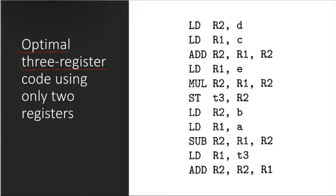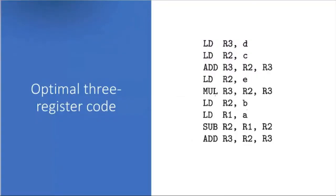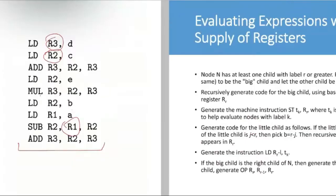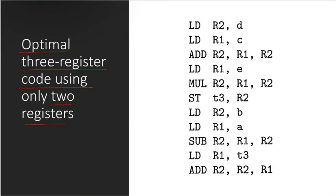Optimal three-register code using only two registers: code initially written using three registers R3, R2, R1. When moving to a machine with only two registers, you need to reorganize or regenerate the code using two registers. You can see the same work is done with two registers — the trade-off is a higher number of load and store operations, but otherwise the result is the same.